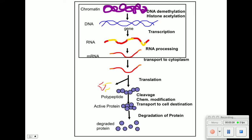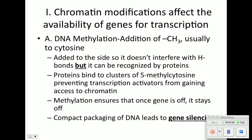These bolded words off to the side are processes we have discussed or will discuss today. We're going to talk about DNA methylation and histone acetylation. DNA methylation is the addition of CH3 molecules, usually attached to the cytosine inside the DNA molecule. It's attached to the side, so it doesn't interfere with hydrogen bonds — we don't want our bonds to break apart.